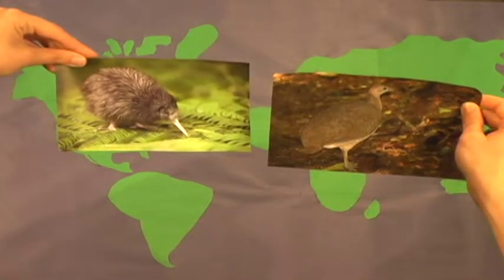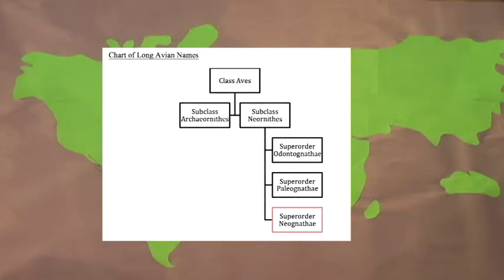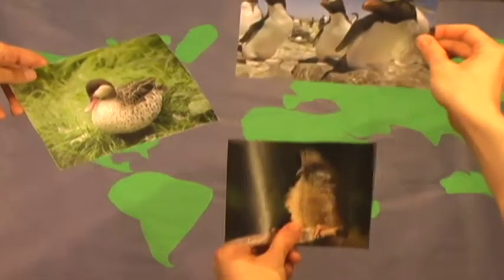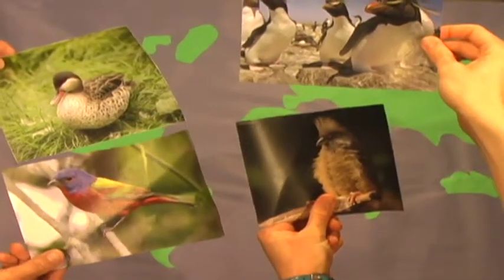Finally, there is the superorder of Neognathae, which means new jaw, as they have a modern, flexible palate. There is a lot of diversity in the superorder, with 25 orders ranging from penguins and waterfowl to mousebirds and perching birds.